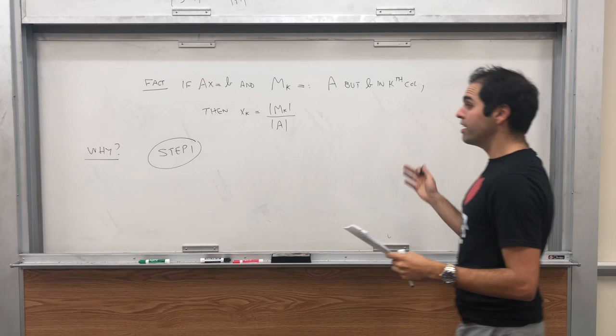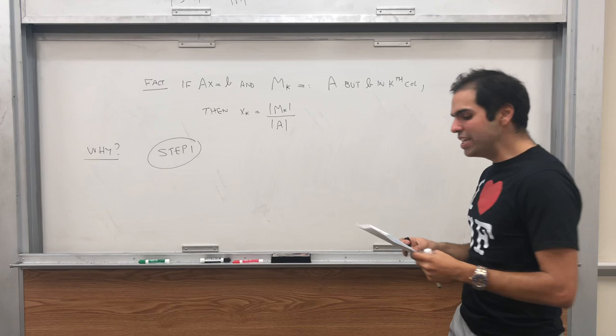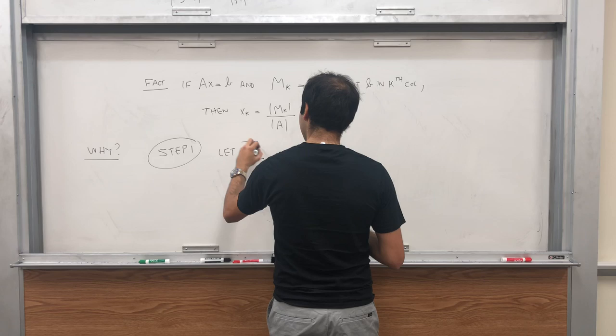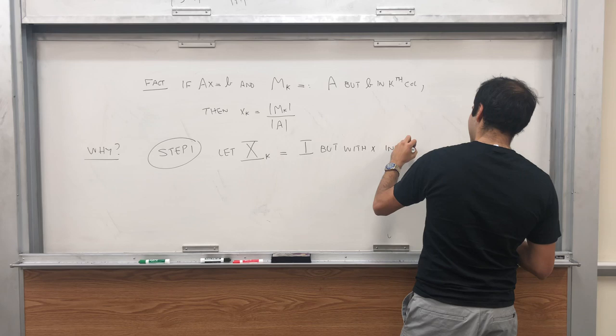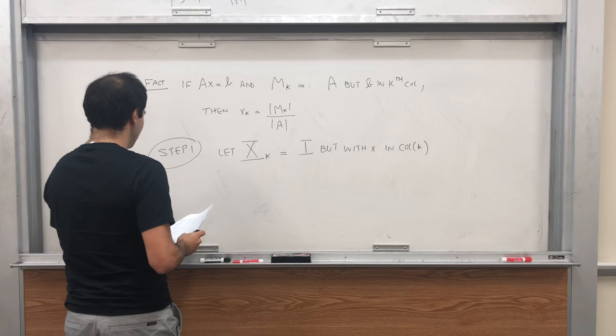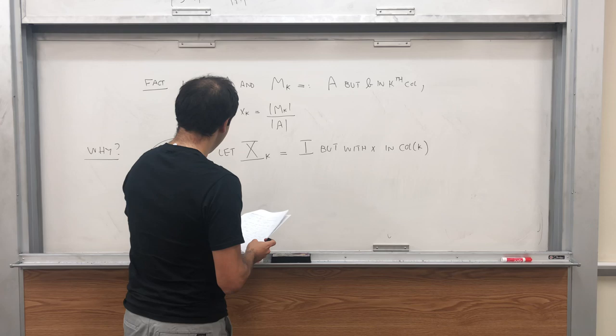So why is that true? And as I said, the notation seems to make no sense, but just wait for it, it'll make sense at the end. So step one. What we would like to define is something like the identity matrix, but we tweak it a little bit. So let Xk, just to distinguish it from little xk, be the identity but with x in column k.